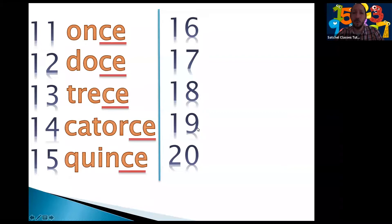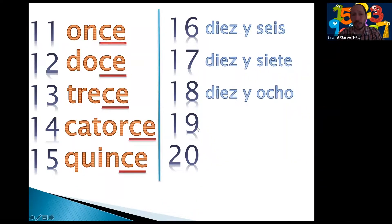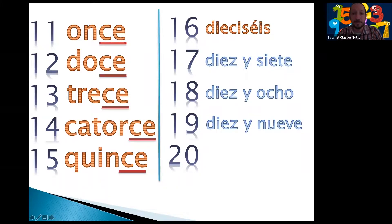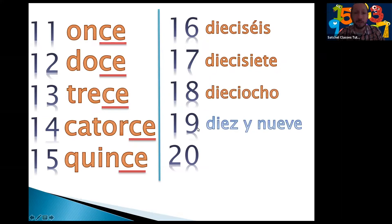What happens with the next four — 16, 17, 18 and 19? There is something really interesting in Spanish: we actually say 'ten and the number.' We say 10 and 6, 10 and 7, 10 and 8, or 10 and 9, which is very simple to remember. We do apply a slight change to the spelling when we write it down, but the pronunciation is essentially the same — we say the word very fast. So 10 and 6 becomes dieciséis, 10 and 7 becomes diecisiete, 10 and 8 becomes dieciocho, 10 and 9 becomes diecinueve.